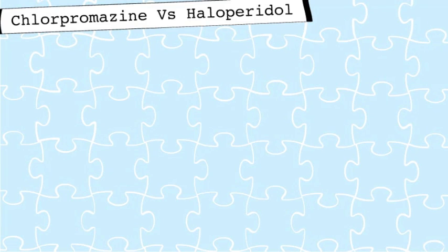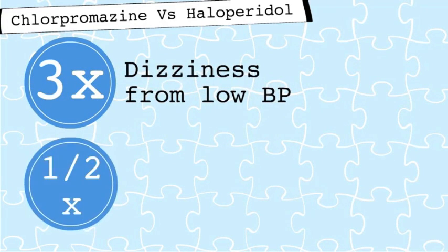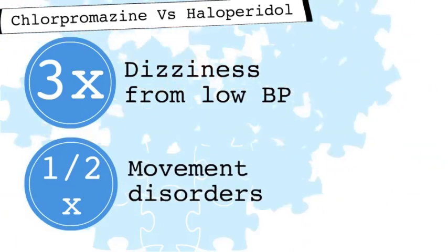Compared to haloperidol, chlorpromazine is 3 times as likely to give you low blood pressure that makes you dizzy, but half as likely to give you Parkinson's disease-like side effects.